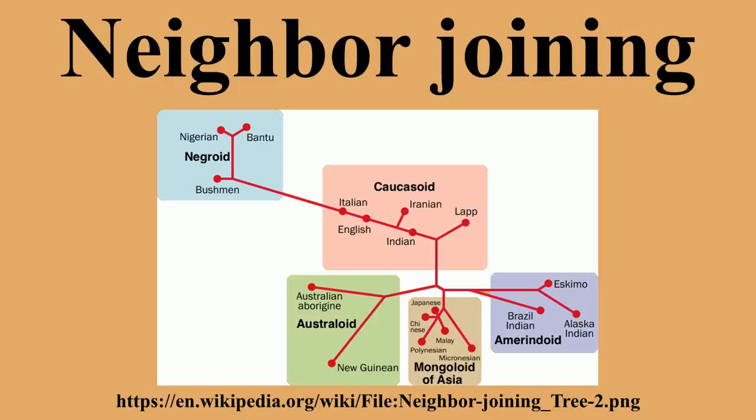Given data of sufficient length, neighbor joining will reconstruct the true tree with high probability. Compared with UPGMA and WPGMA, neighbor joining has the advantage that it does not assume all lineages evolve at the same rate. Nevertheless, neighbor joining has been largely superseded by phylogenetic methods that do not rely on distance measures and offer superior accuracy under most conditions. Neighbor joining has the undesirable feature that it often assigns negative lengths to some of the branches.